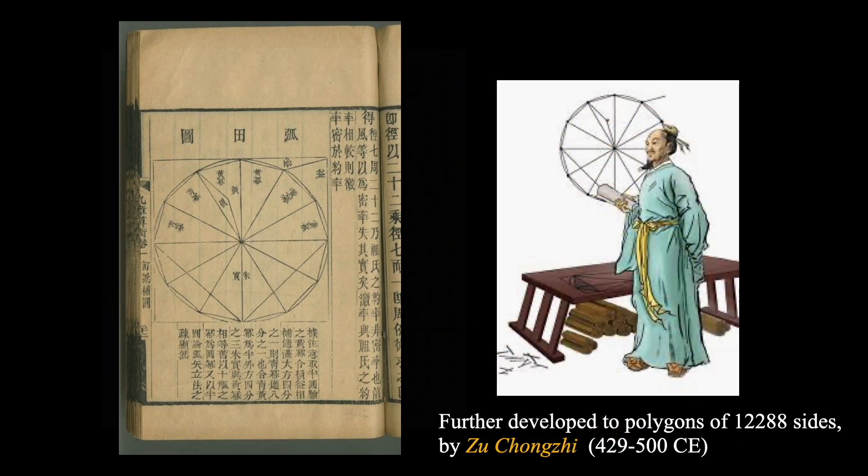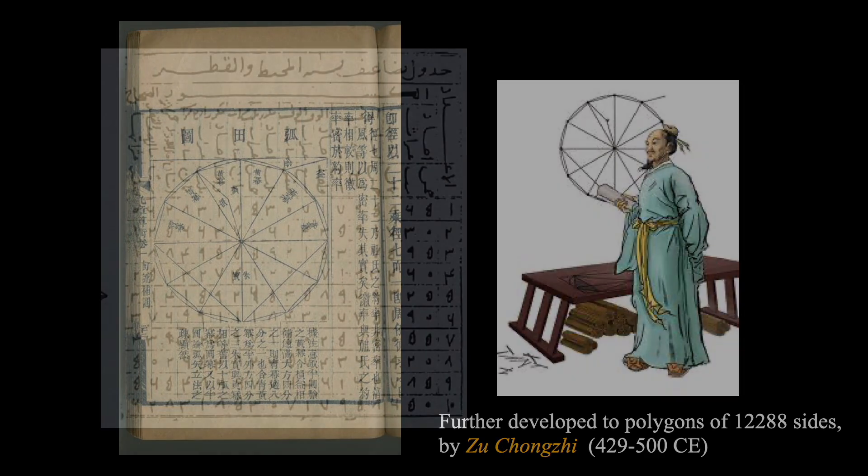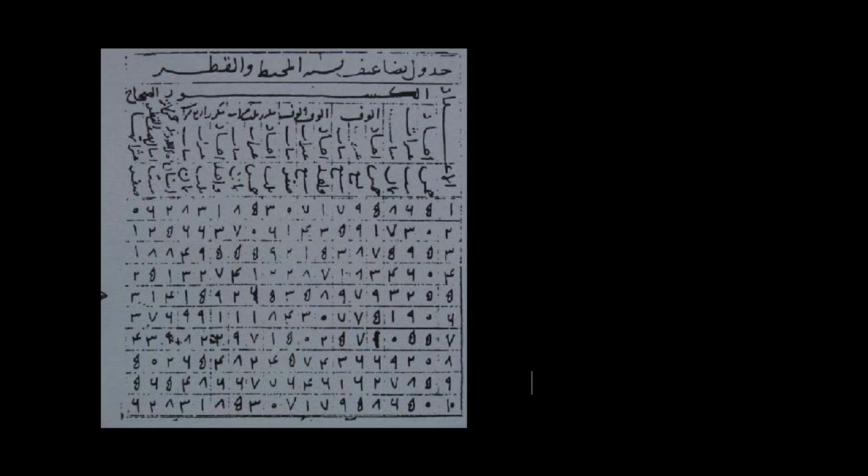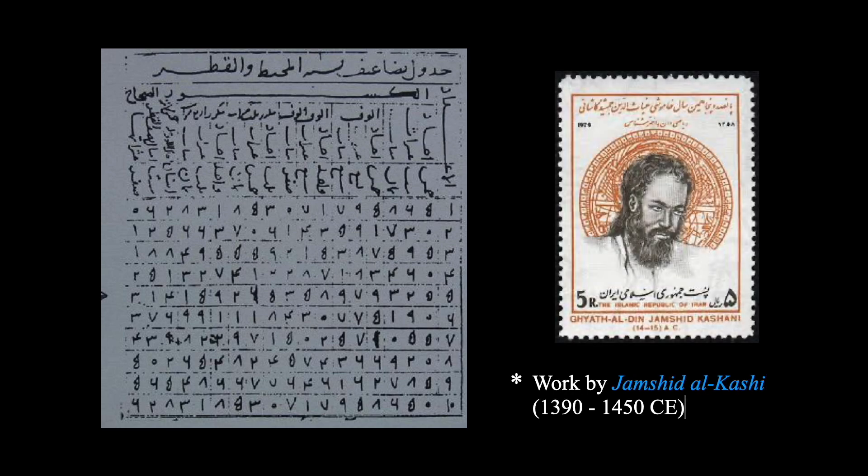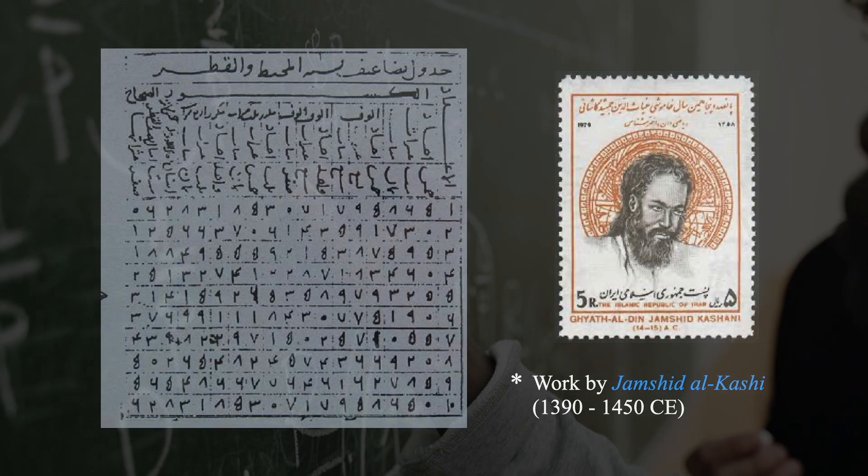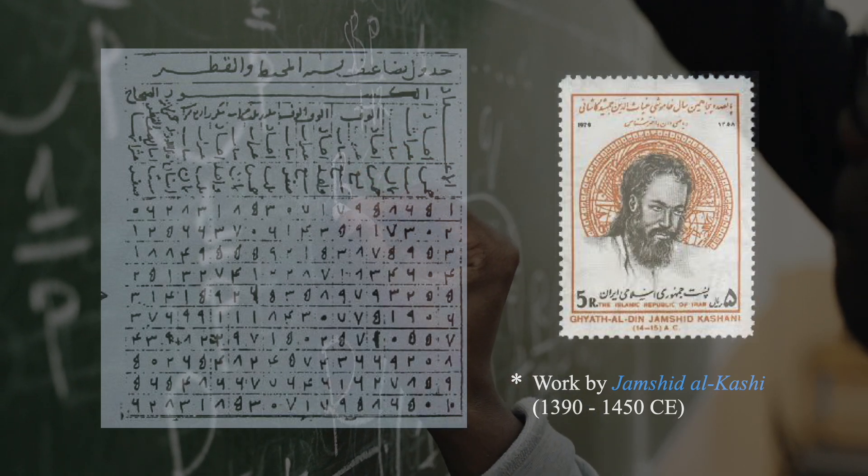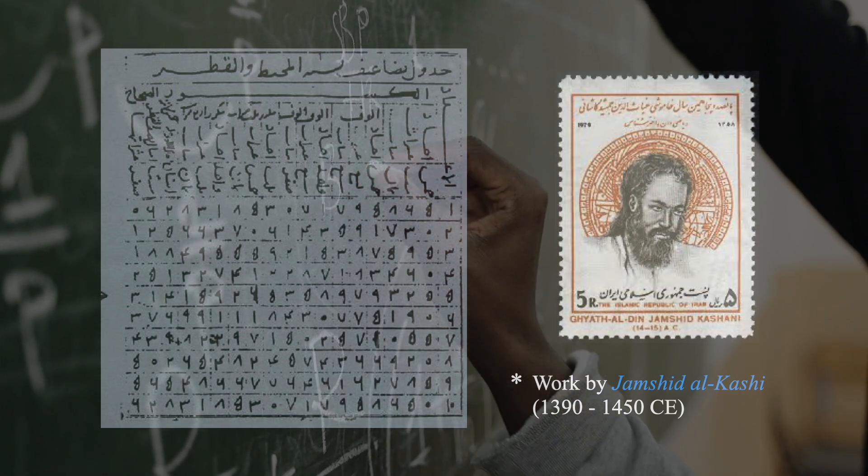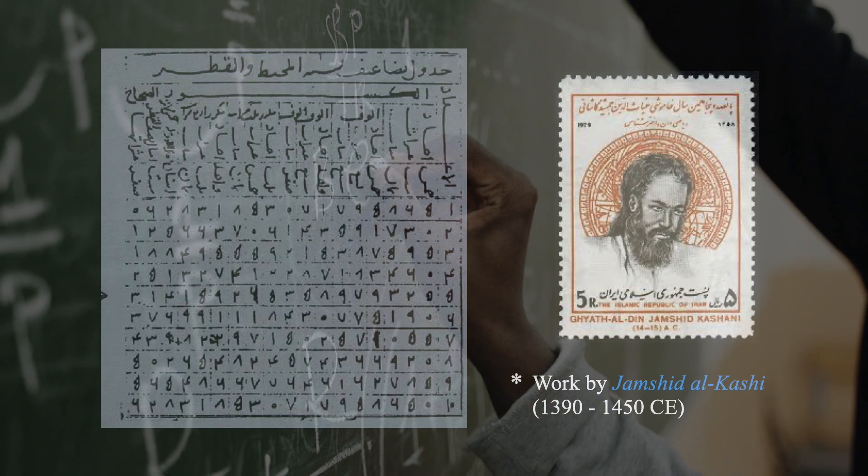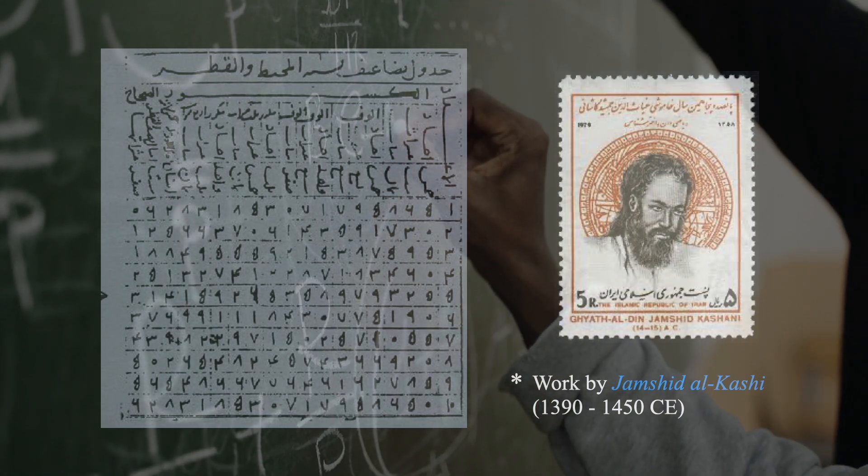As the technology advances, the number of sides keep increasing and increasing and hence the sensitivity of the computation. By 15th century, Islamic mathematicians were already able to apply this polygonal approach to calculate pi to 16 decimal places, with a polygon with 800 million sides.